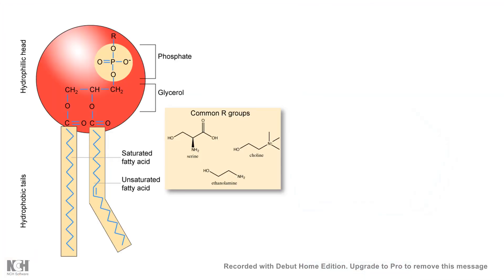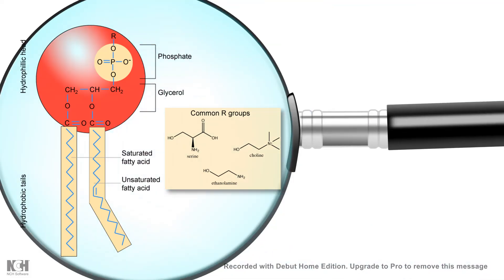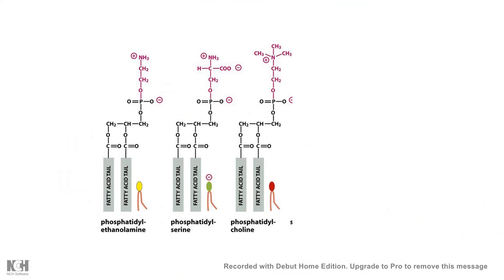Now if we look at the structure in details, the common group, the head group could be different. For example, serine, choline, or ethanolamine, and based on which of the head group is present, the phospholipid would be termed differently.